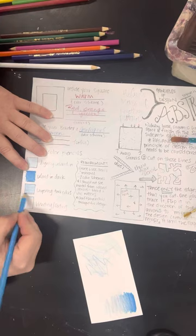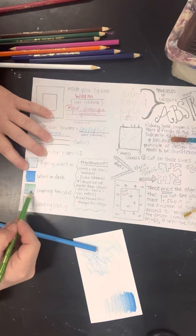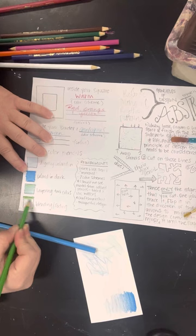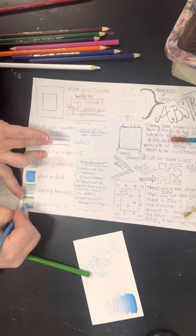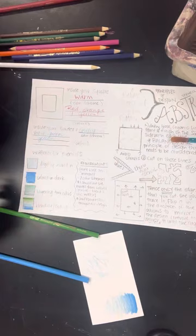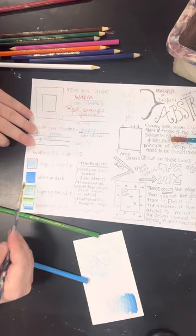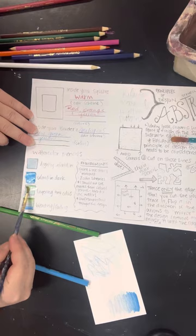Layering two colors, so let's do blue and green together. And then blending and fading into each other - let's do green fading into blue. All right, so once you have everything colored in, then you would add water to see the different ways this can turn out.